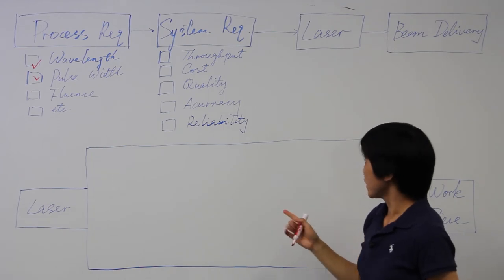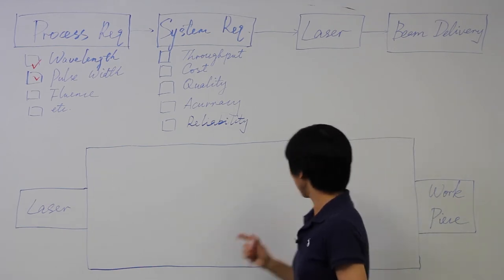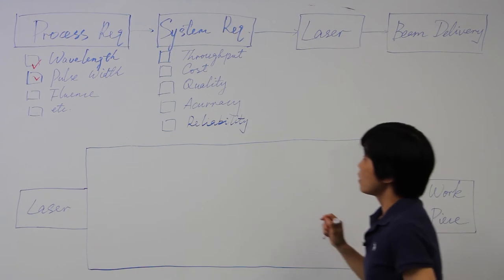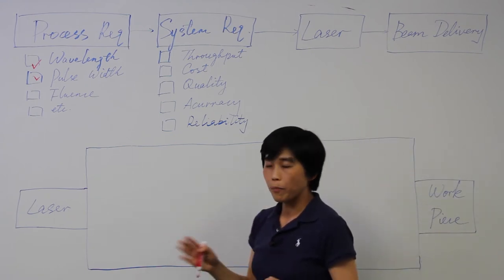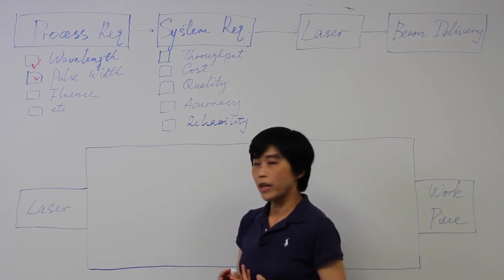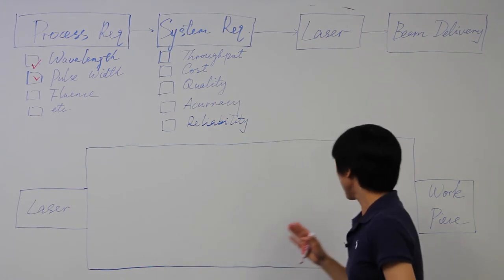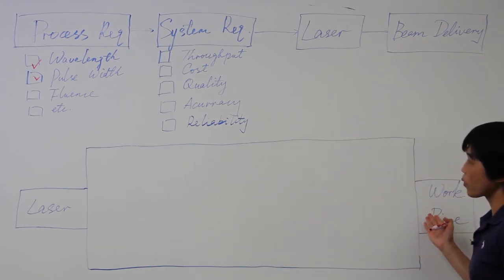And the fluence is defined by the power and the spot size at work surface. So we need to choose the laser power or pulse energy and pulse repetition rate to meet the fluence and process speed requirement at work.